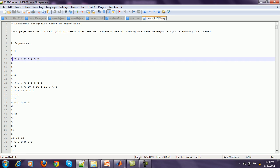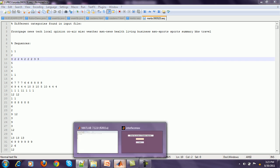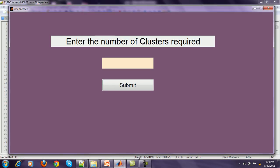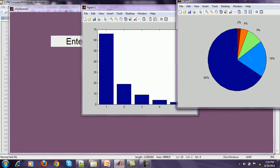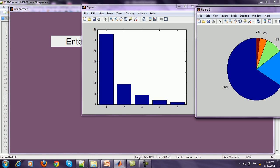This is how our interface looks like. We can enter the number of clusters required. For example, we have entered the number 5. If we click on submit, we get the following output. This is the graphical representation of the clustering.